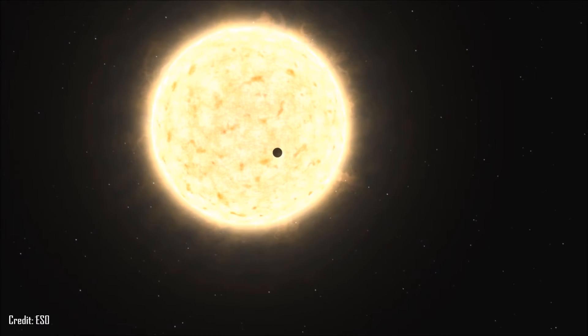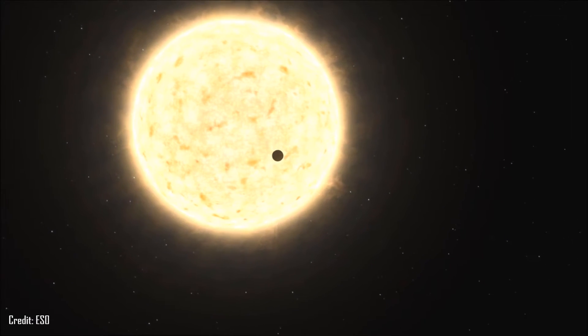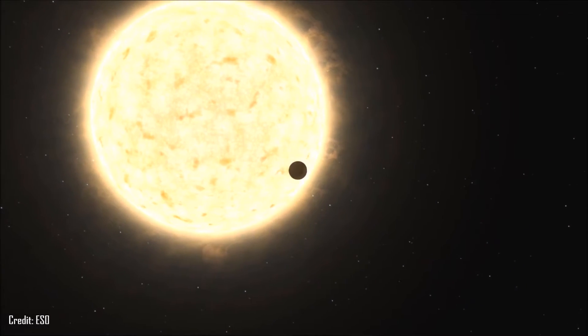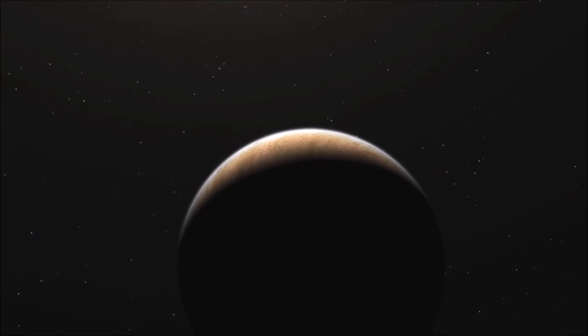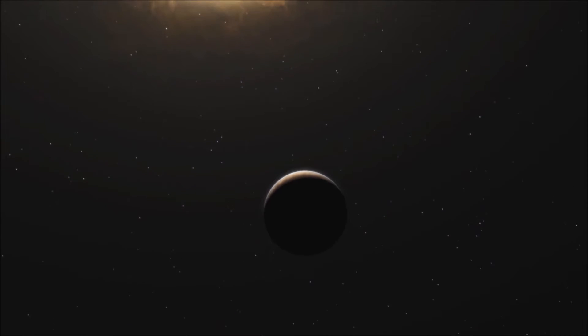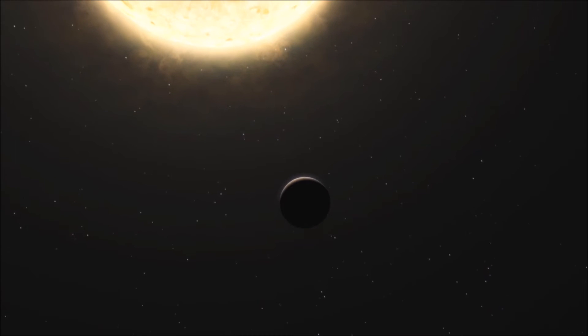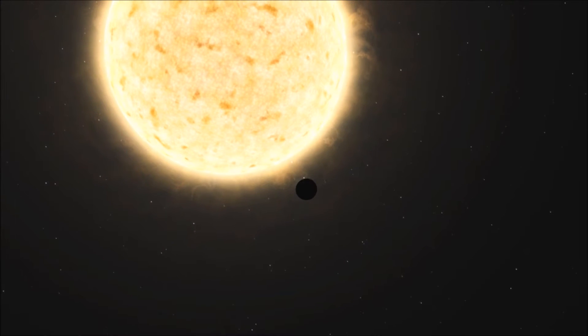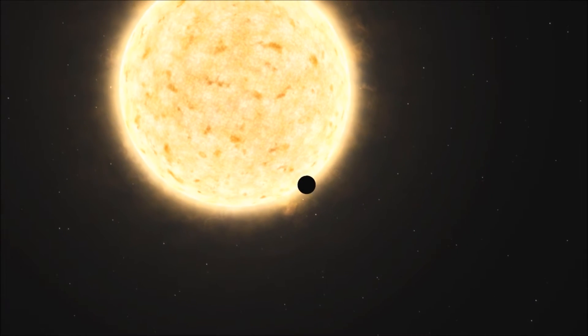An exoplanet orbiting a star that entered our Milky Way from another galaxy has been detected by a European team of astronomers. The Jupiter-like planet is particularly unusual as it is orbiting a star nearing the end of its life and could be about to be engulfed by it, giving tantalizing clues about the fate of our own planetary system in the distant future.